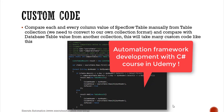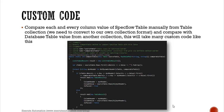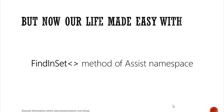This comparison is really, really tedious because it requires a lot of coding operations. But right now our life is made much easier with the introduction of SpecFlow version 2.1 and this method - the FindInSet method of the Assist namespace. This method is really cool. The comparison operation is made so easy that you can do it in one line of code and your operation is all done.